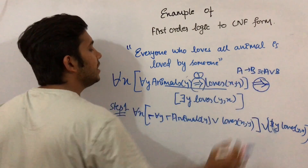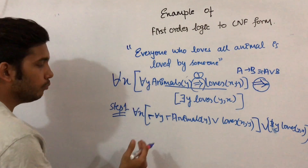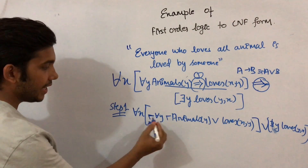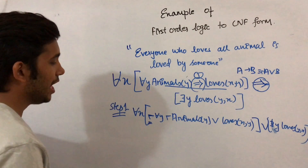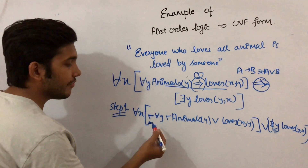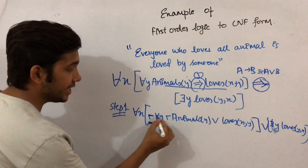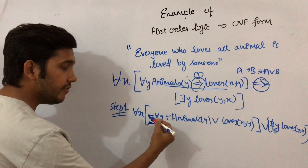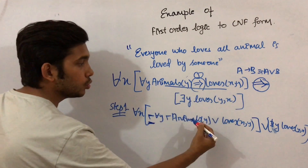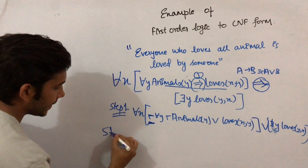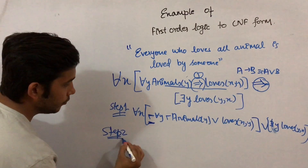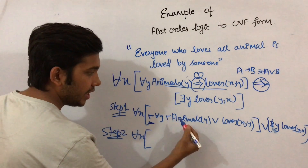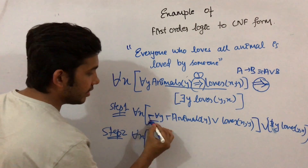In step two, we move the negation inward to precede the predicates. When a negation is present in front of a quantifier — like in this example, in front of a universal quantifier — we move this negation to the inner bracket. For all X, the negation moves into the inner bracket.